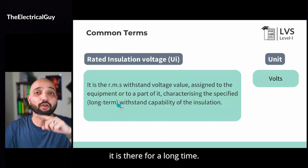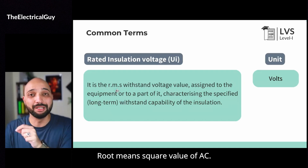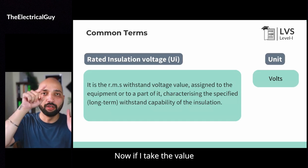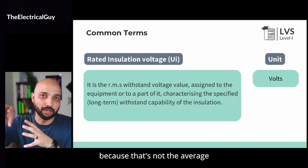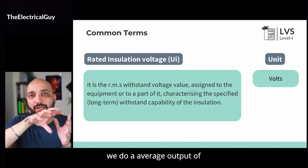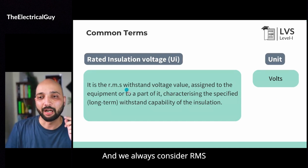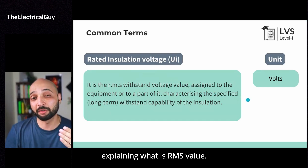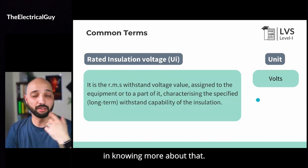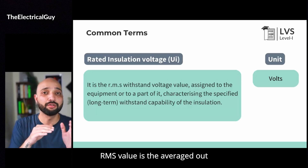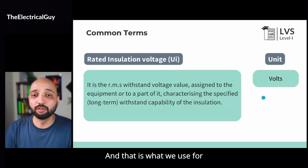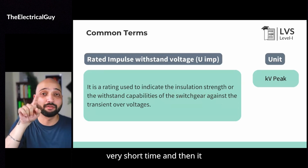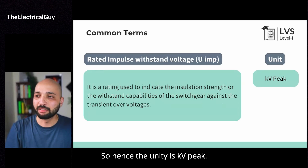The rated insulation voltage is an RMS value — root mean square value of AC. AC is basically a sine wave. If I take the value of the positive peak, I may not get the correct value because that's not the average value. So what we do, we average out the whole waveform, and what we get is the RMS value. We always consider RMS value for the insulation voltage. I have a dedicated video explaining what RMS value is on YouTube if you're interested. But just to remember: RMS value is the average value of the sine wave, and that is what we use for insulation voltage. But when we say impulse voltage, it is always a peak value because that peak comes, remains in the system for a very short time, and then it dies down. Hence the unit is kV peak.